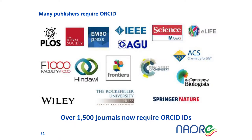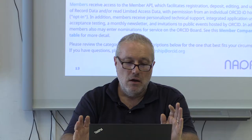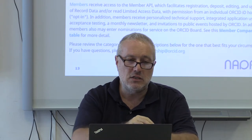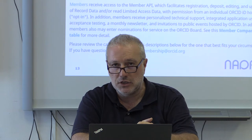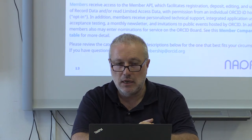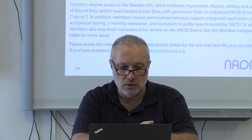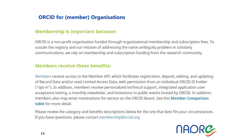Very interesting and useful: many publishers require ORCID. Over 1,500 journals now require ORCID IDs. ORCID is not only for researchers, but also for organizations and member organizations.